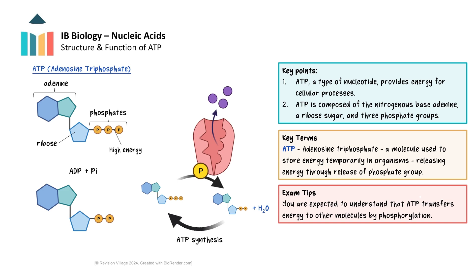When ATP donates a phosphate group in a process called phosphorylation, it can provide energy for proteins to pump molecules across the membrane against the concentration gradient. Energy is then required to convert ADP, the low-energy form, to ATP, the high-energy form — referred to as ATP synthesis — and this occurs in the mitochondria during cellular respiration. You are expected to understand that ATP transfers energy to other molecules via phosphorylation, or donating a phosphate group.